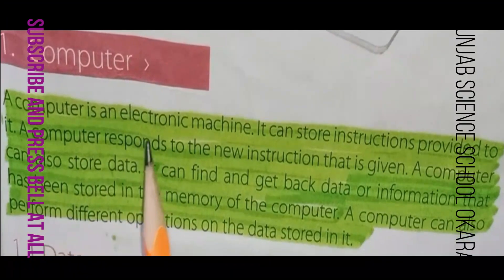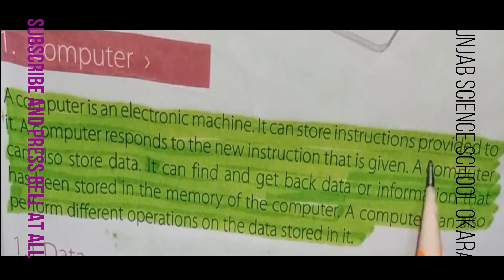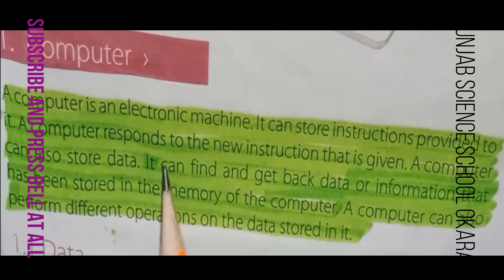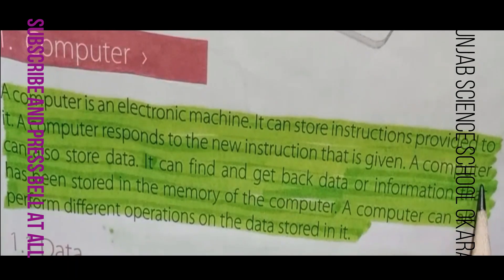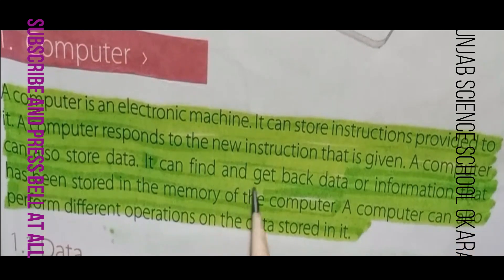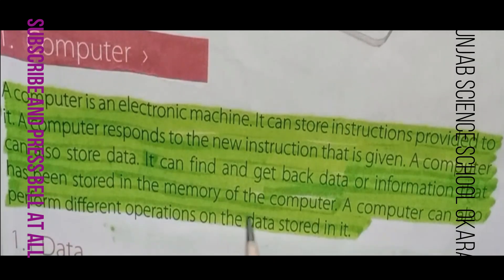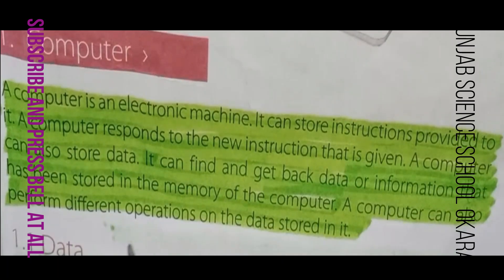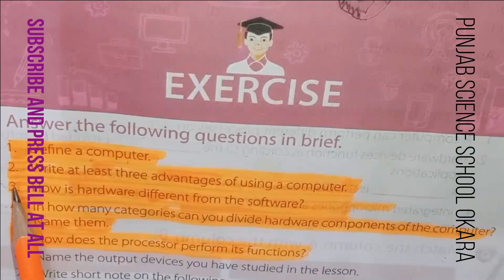A computer is an electronic machine. It can store instructions provided to it. A computer responds to new instructions that are given. A computer can also store data. It can find and retrieve data or information that has been stored in the memory of the computer. A computer can also perform different operations on the data stored in it.